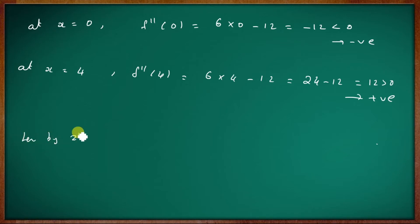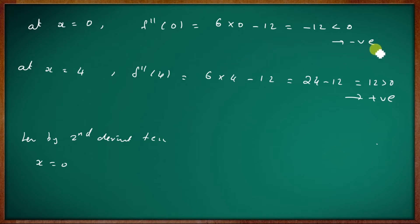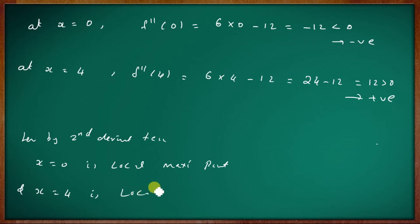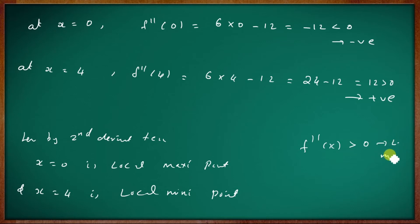Hence, by the second derivative test: x equal to 0 has f double dash less than zero, so it is the local maximum point. And x equal to 4 has f double dash greater than zero, so it is the local minimum point. To summarize: f double dash of x greater than zero is local minimum, and f double dash of x less than zero is local maximum.